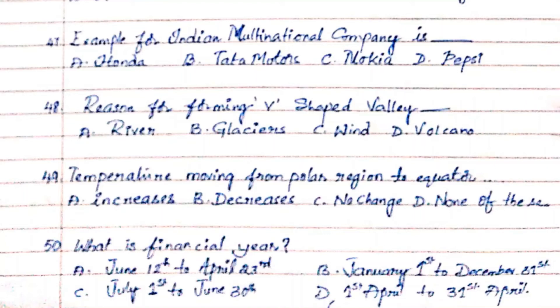Question 50: What is a financial year? Option A. June 12th to April 23rd, Option B. January 1st to December 31st, Option C. July 1st to June 30th, Option D. 1st April to 31st March. The answer is Option D. 1st April to 31st March.